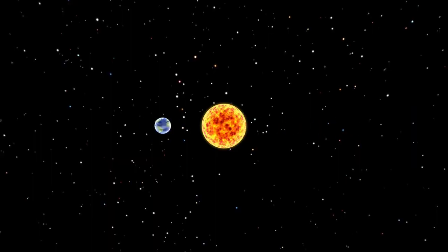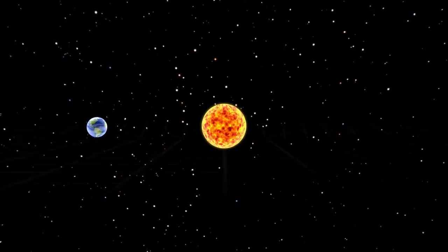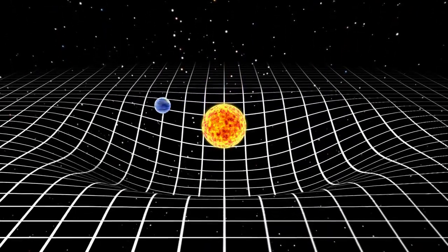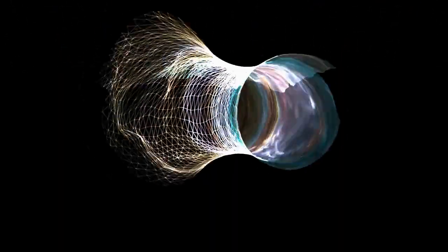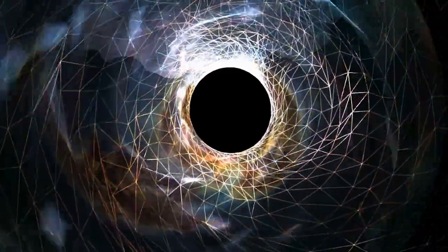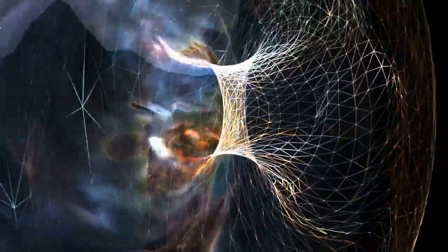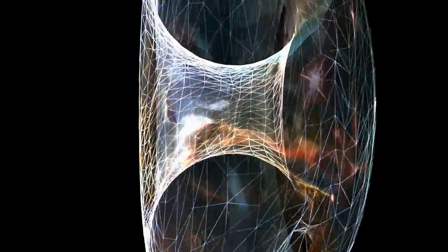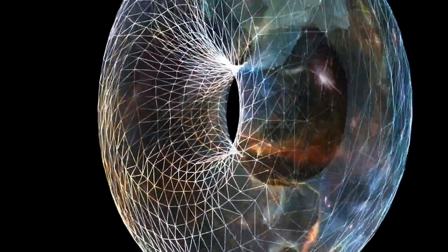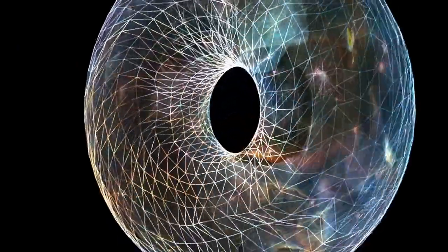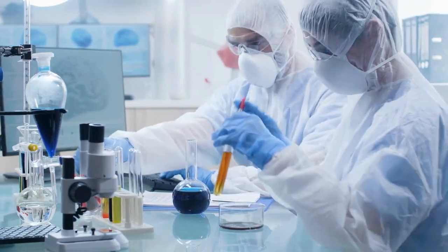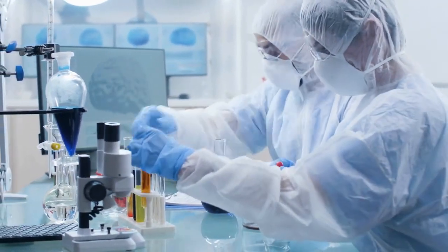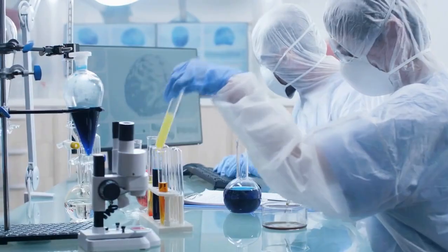We will begin by discussing the basics of general relativity, which includes the core concept of space-time curvature. Moving forward, we will explore some of the theory's most significant predictions, such as the bending of light by gravity, the existence of black holes, and the detection of gravitational waves. We will examine how these predictions came about and how they were proven through observations and experiments conducted over the years.